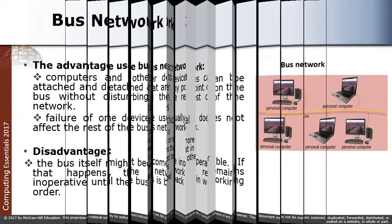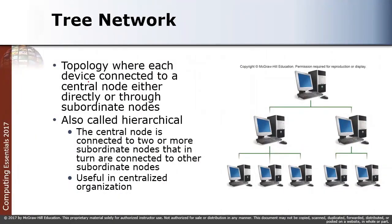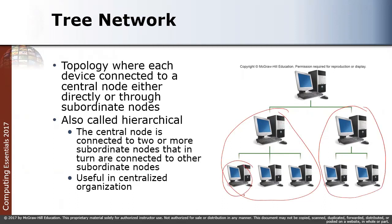A tree network, also called a hierarchical network, is a topology where each device is connected to a central node either directly or through subordinate nodes. The center node is connected to two or more subordinate nodes, which in turn connect to other subordinate nodes. This topology is useful in centralized organizations where different departments communicate through their own nodes up through the hierarchy.